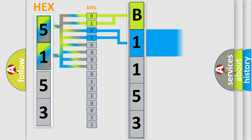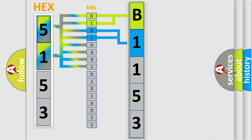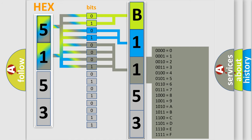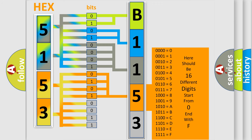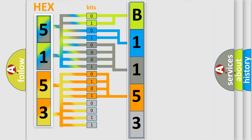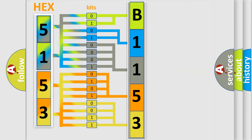The next two bits determine the second character. The last four bits of the first byte define the third character of the code. The second byte is composed of a combination of eight bits. The first four bits determine the fourth character of the code, and the combination of the last four bits defines the fifth character. A single byte conceals 256 possible combinations.